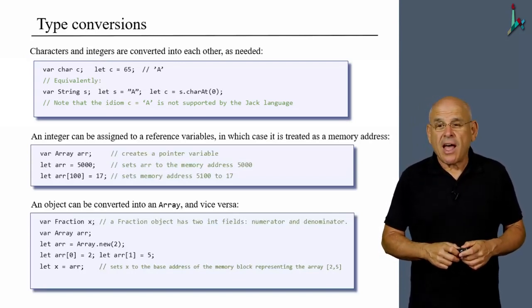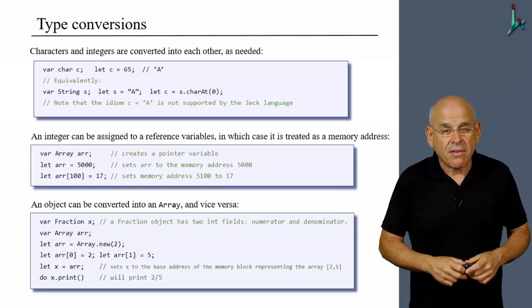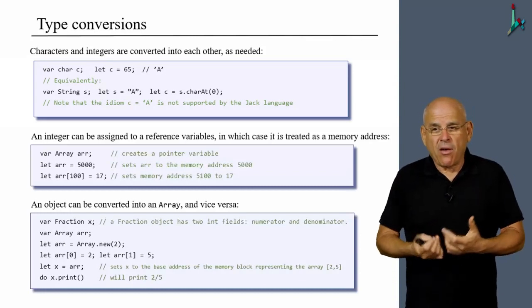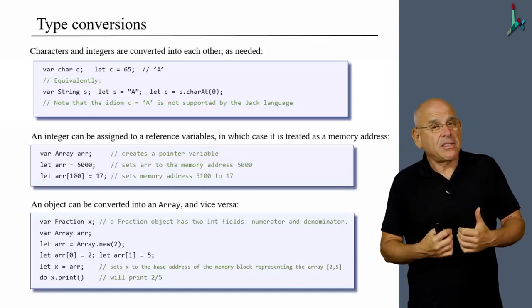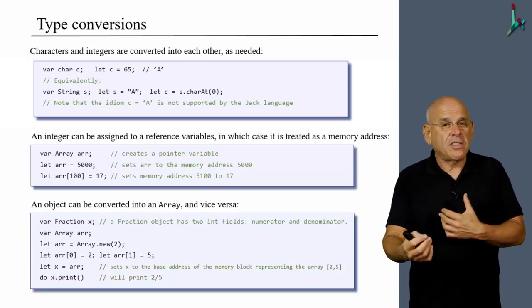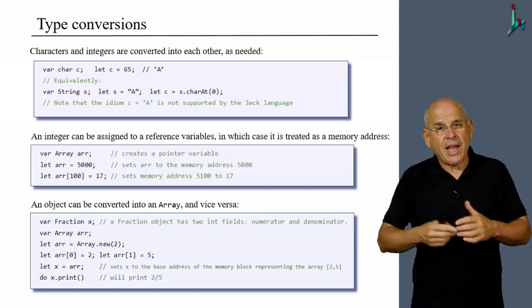So x, which is a fraction, now points at the ARR array. And once I do this, I can say, for example, do x.print. And this will invoke the print method of the fraction class on x. And even though x points to an array, it will treat this array as a fraction. And therefore, it will print it as 2 slash 5.